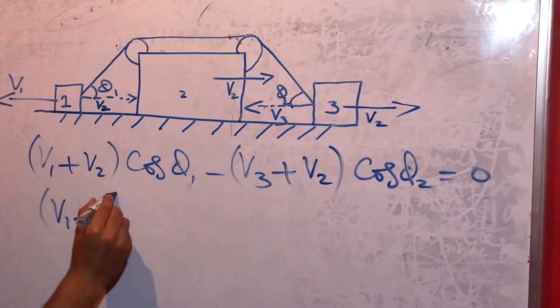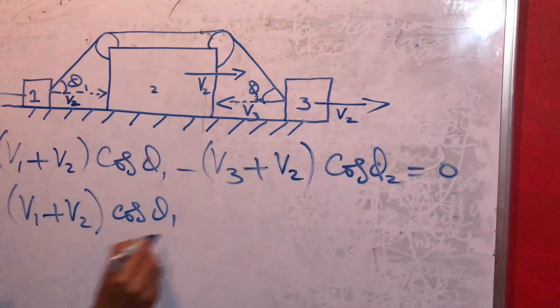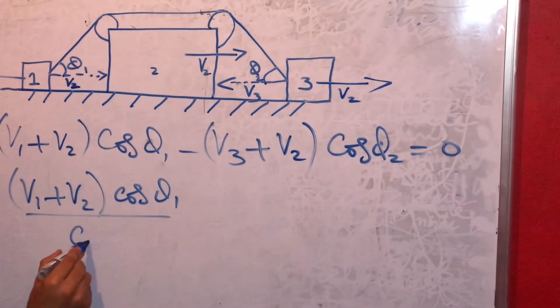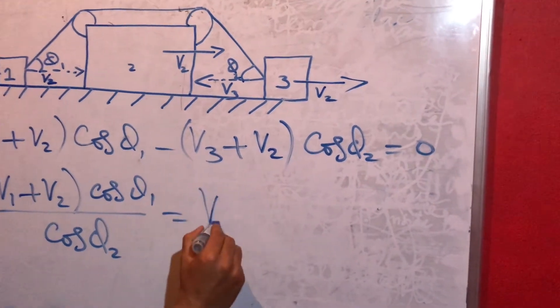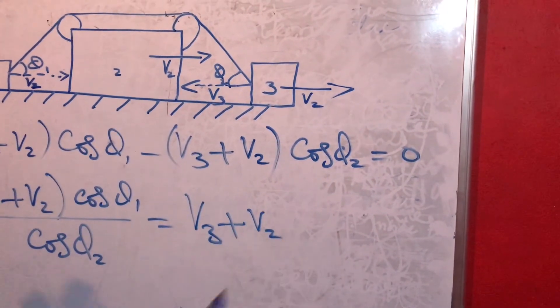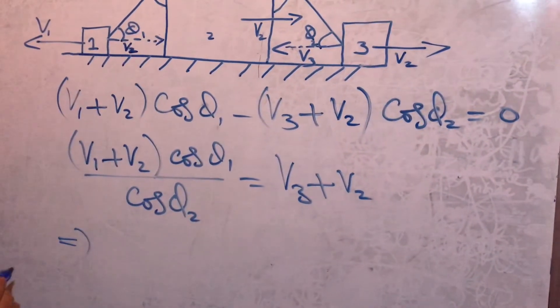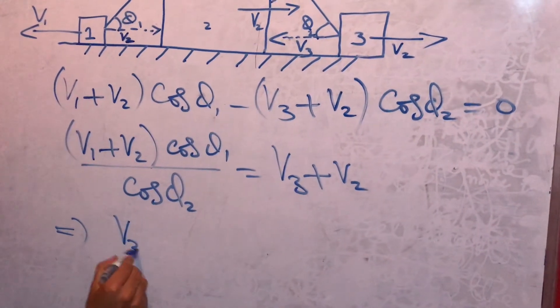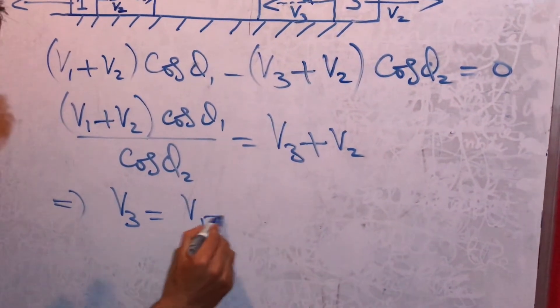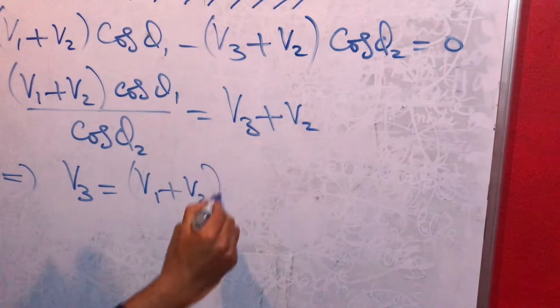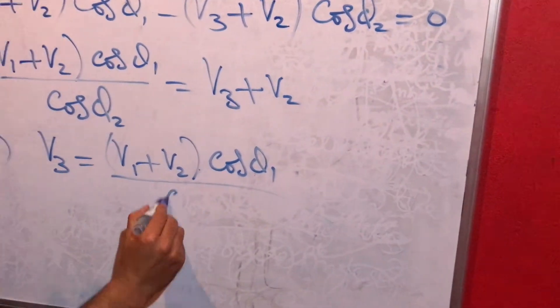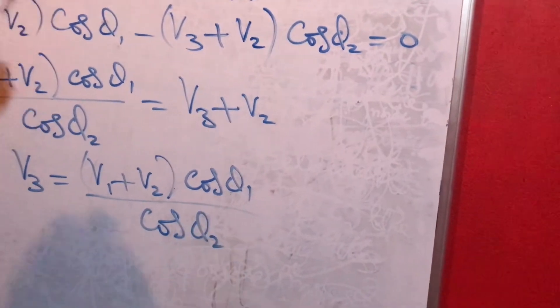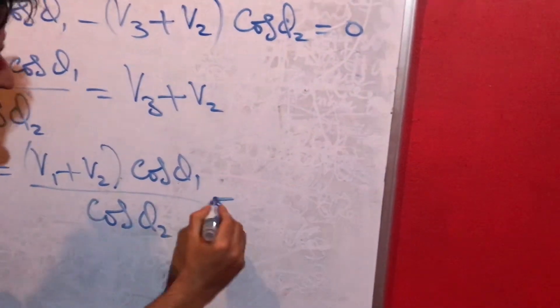By solving this, we can easily write (v1 + v2) cos theta 1 divided by cos theta 2 equals to v3 + v2, which will imply that v3 is equal to (v1 + v2) cos theta 1 divided by cos theta 2 minus v2.